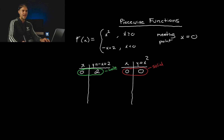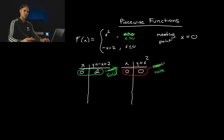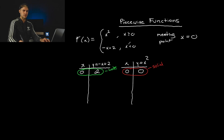If instead this said x is greater than zero and the other said x is less than or equal to zero, then that one would be the solid dot and the other would be the hole. But it's not like that. Basically: this is the hole on this function, this is going to be the solid. So before filling out your table, that's the first thing you always want to label.